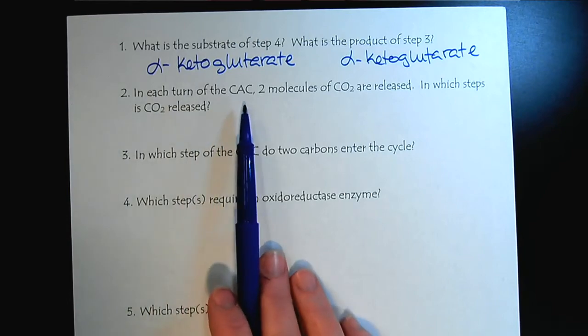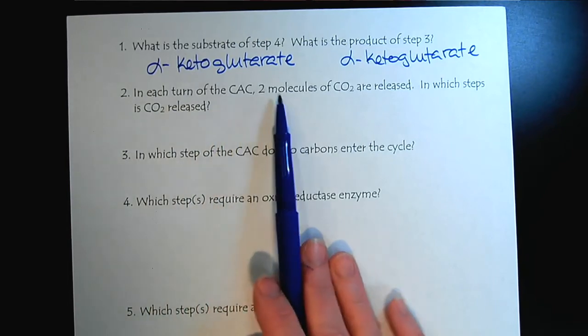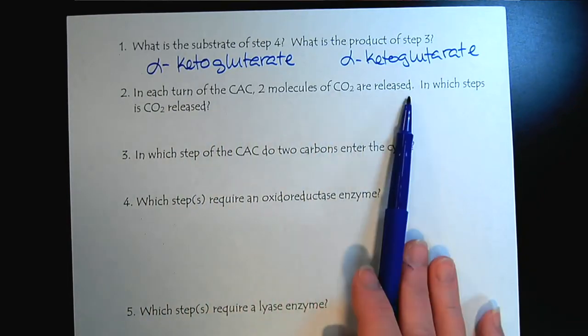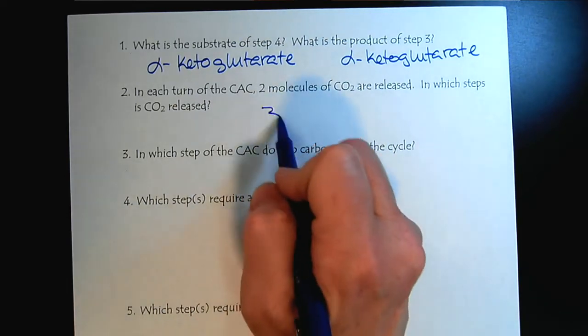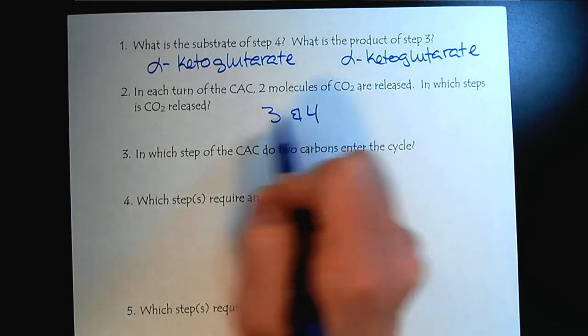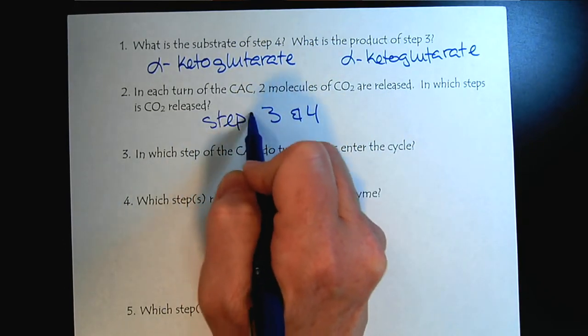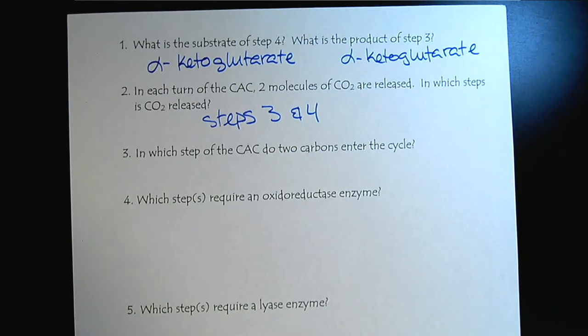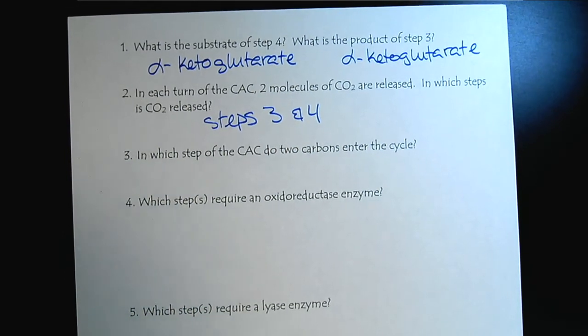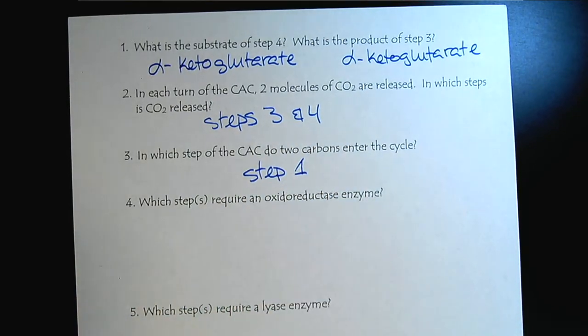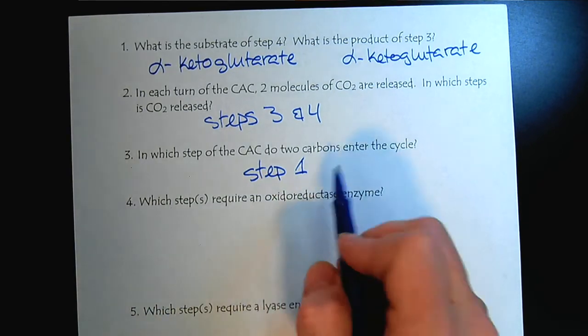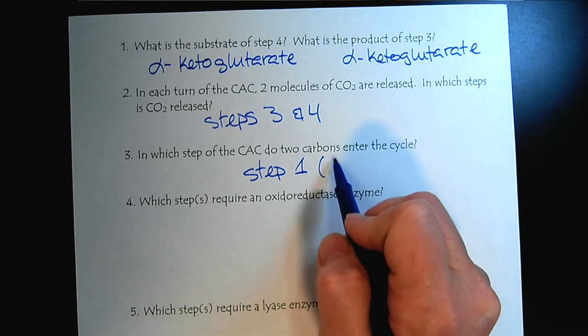It's alpha-ketoglutarate. And what was the product of step three? Alpha-ketoglutarate. That's why it's called a cycle. Now, in each turn of the citric acid cycle, two molecules of CO2 are released. In which step are they released? I think this is a pretty straightforward one. Steps three and four. In which step of the citric acid cycle do two carbons enter? That's a one.